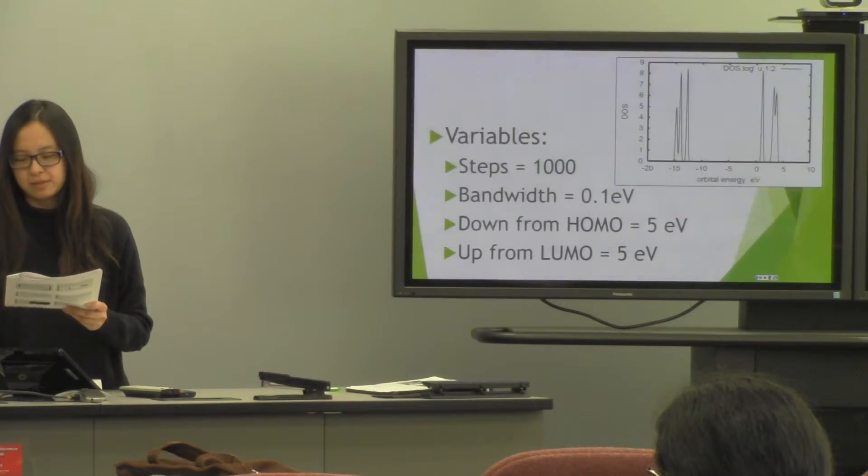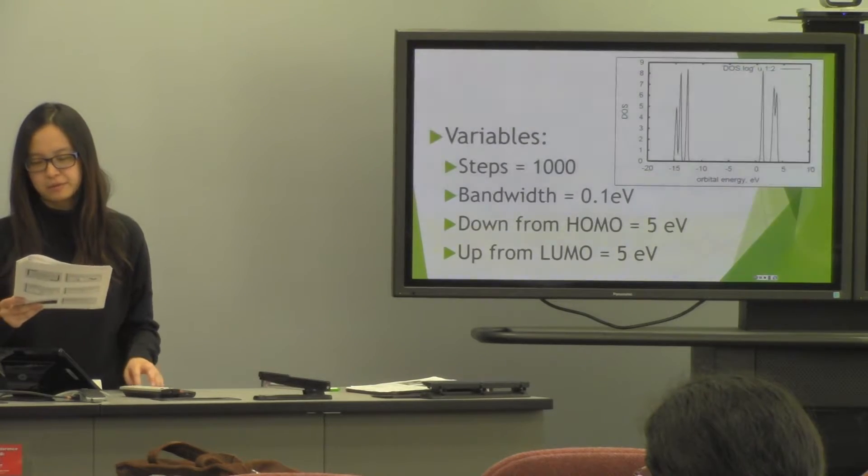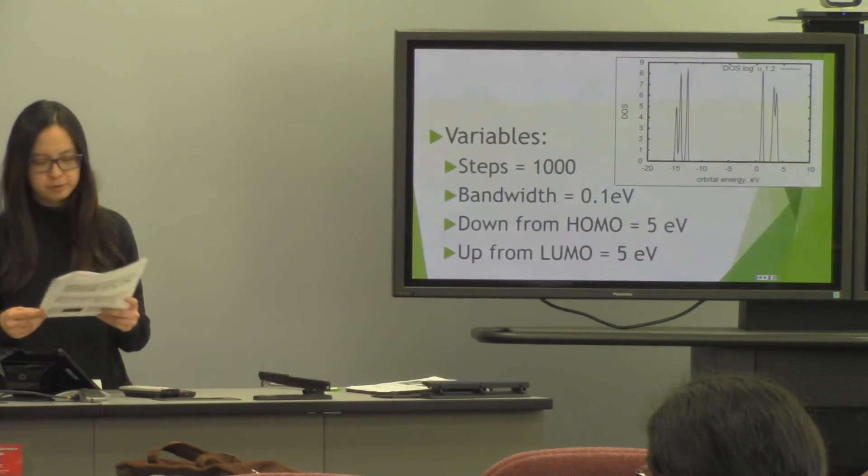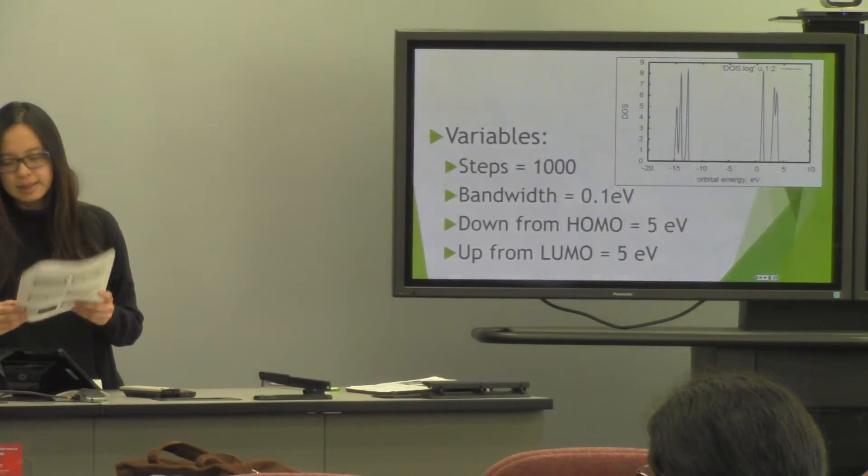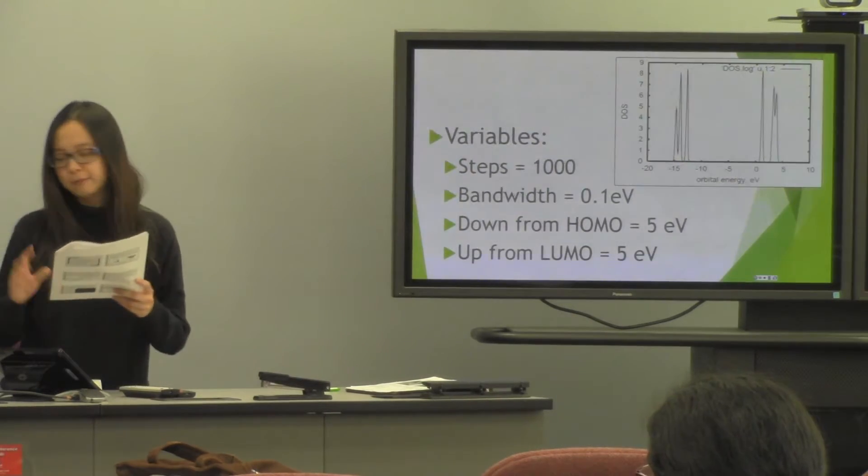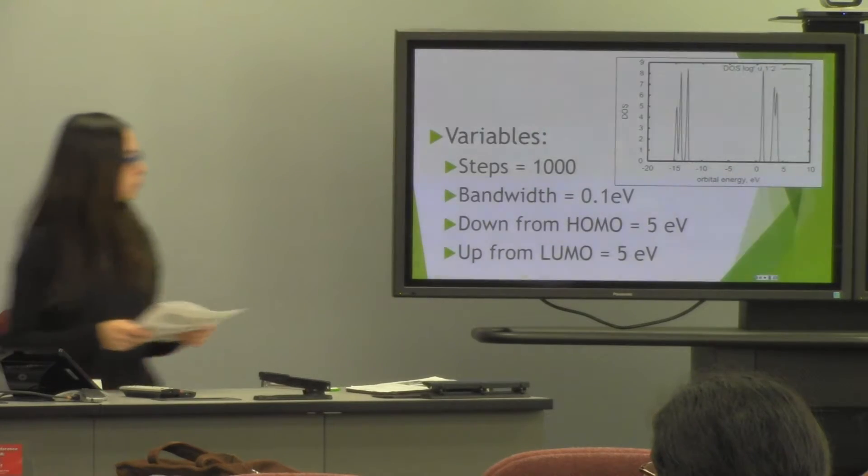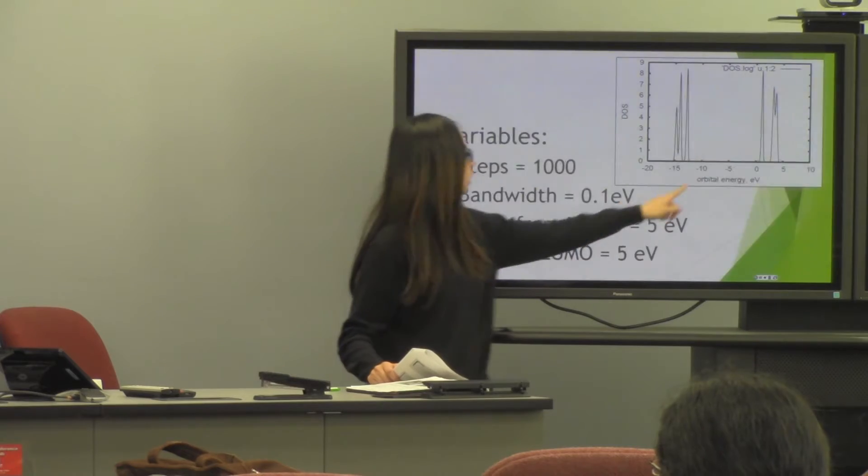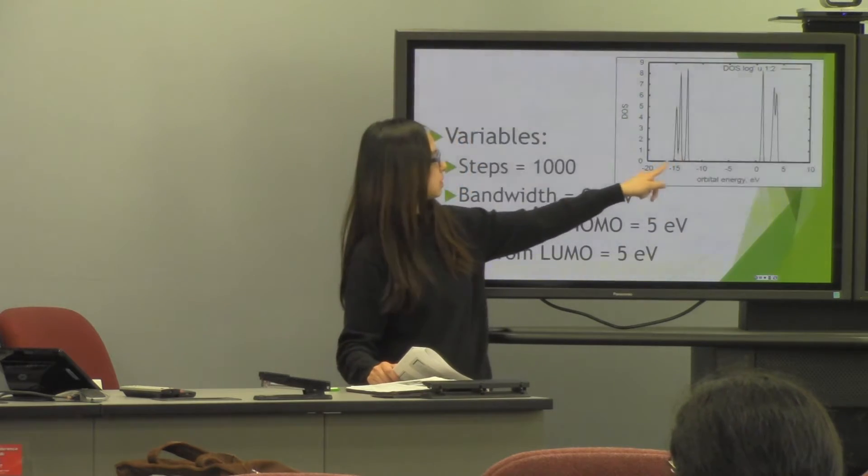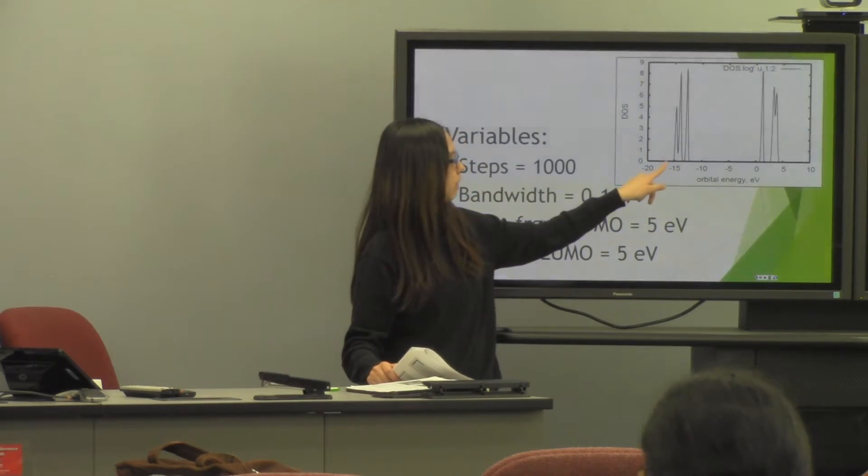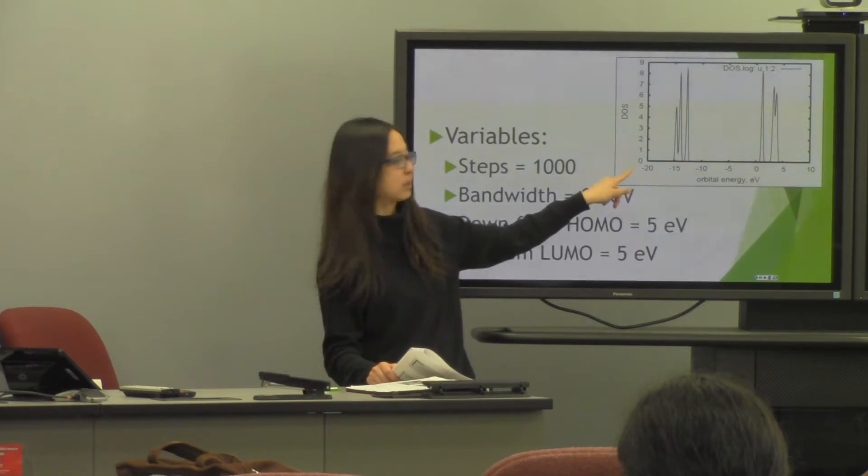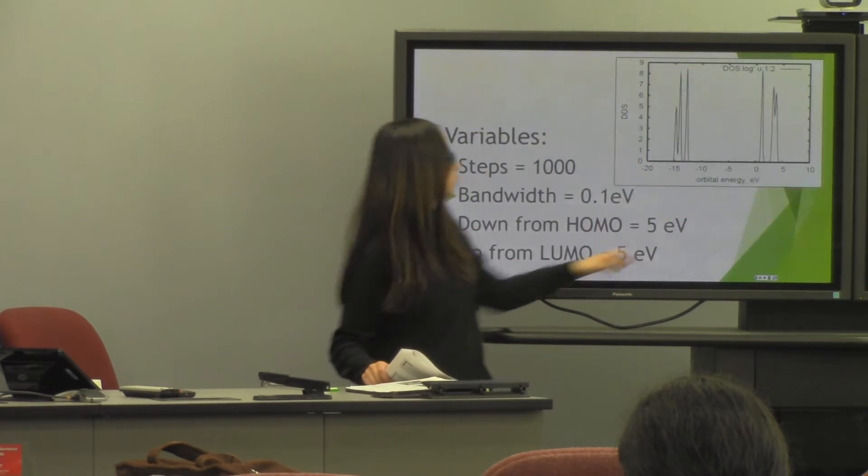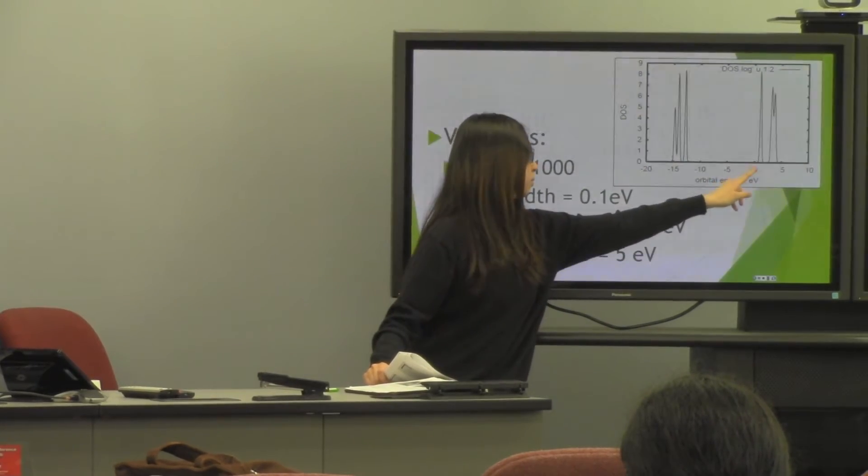Bandwidth you can use anywhere from 0.05 to 0.1 electron volts. And then if you put, like for example, if I put 5 electron volts, then you will calculate from the HOMO 5 electron volts. It will just show in the graph only 5. You put 10, then you will show more. Same goes for the LUMO: 5 from where your LUMO starts and go.